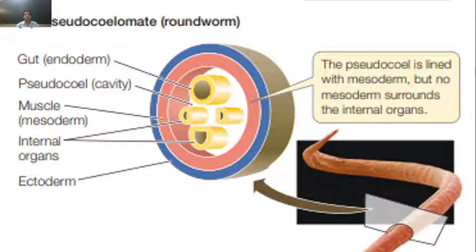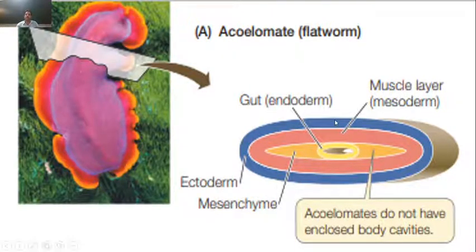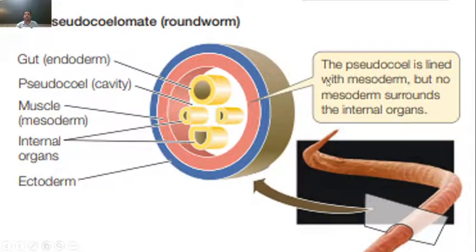The other group of animals is pseudocoelomates. These include roundworms — the phylum Nematoda is called roundworms. These are cylindrical in shape. Previously we saw flatworms which are flat in transverse section, but roundworms have a cylindrical body, and when we cut them they appear round in shape. These are pseudocoelomates.